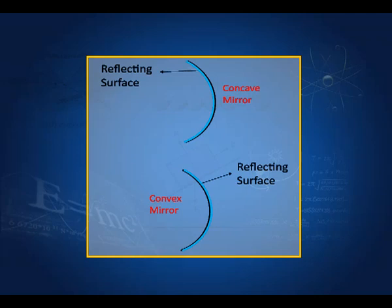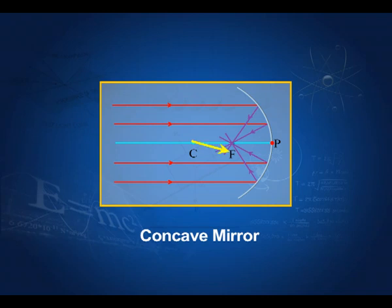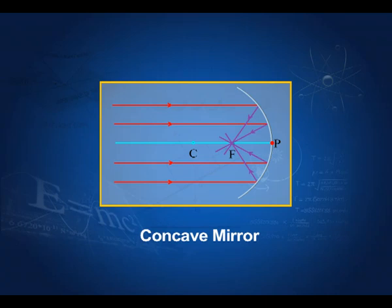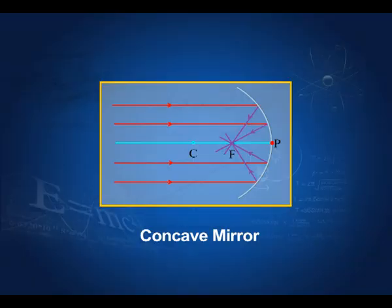If the reflecting side is inside, then it is a concave mirror. If the reflecting surface is outside, then it is known as a convex mirror. We shall first take the concave mirror. If the rays are parallel to the axis — remember, although I am showing the rays far from the axis, they are all actually paraxial rays — then after reflection they meet at this point F, called the focal point. This distance PF is called the focal length. According to our convention, light coming from the left means all distances from right to left are negative. Therefore, the focal length of a concave mirror is negative.